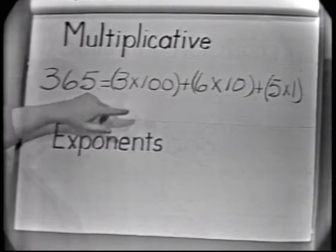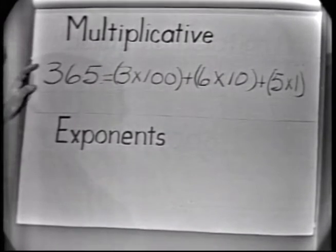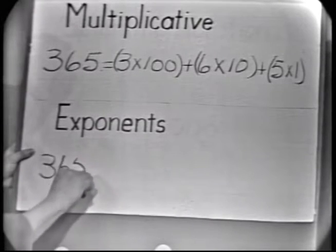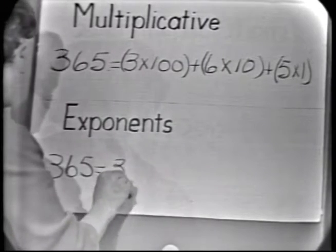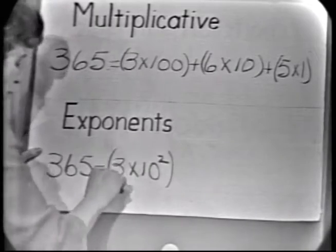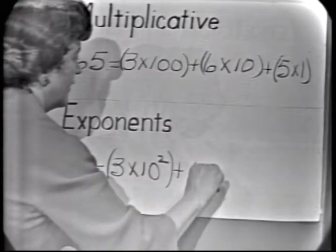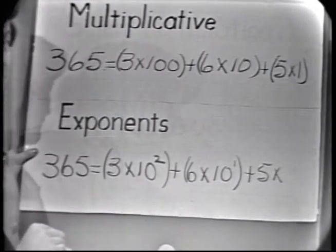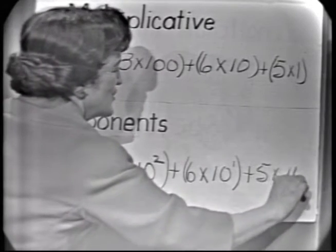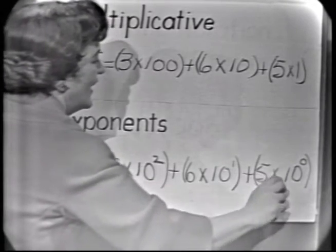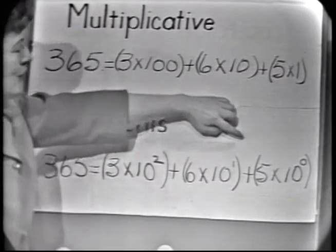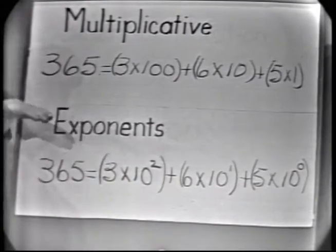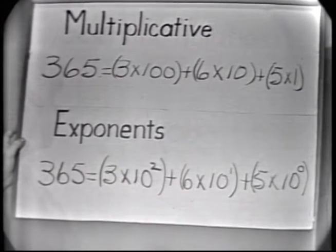These can also be expressed using exponents. We could express three hundred sixty-five using exponents, which would appear something like this: three hundred sixty-five equals three times ten to the second power, plus six times ten to the first power, plus five times ten to the zero power — which we define as one. This again shows the powers of ten: ten to the zero power, ten to the first power, ten to the second power. Recall that we saw these powers as we grouped by threes and also as we grouped by twos.